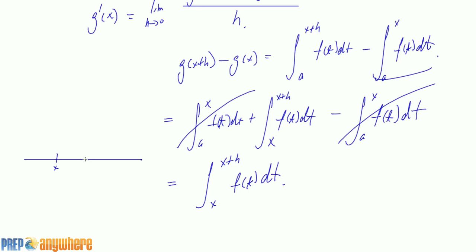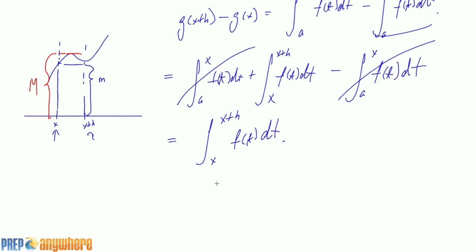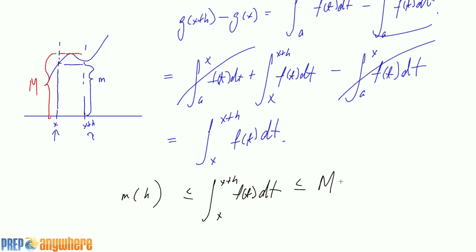We have x, and h is a really, really small number, and we have a function f that passes through there. Now remember the comparison property of integrals: for every continuous function on the interval [x, x+h], there's going to be a minimum value m and a maximum value M. The comparison theorem says the integral from x to x+h of f(t) dt is between m·h and M·h.